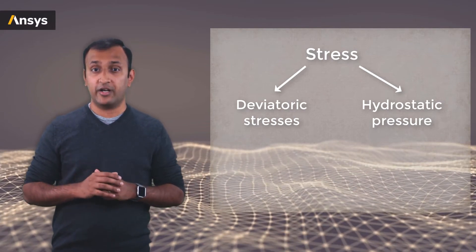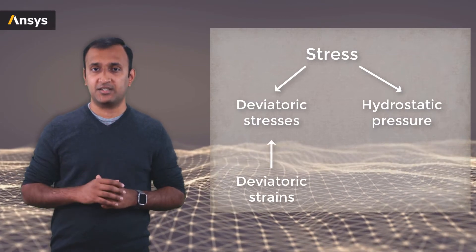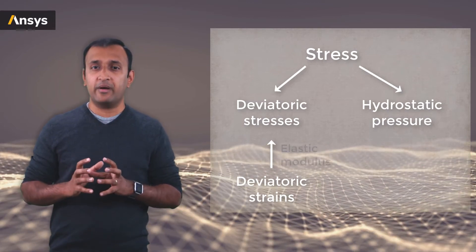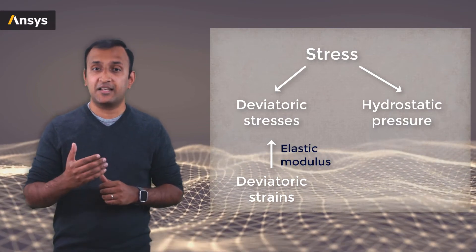The stresses developed in the body due to deviatoric strains are called deviatoric stresses. And the ability of the material to resist deviatoric strain is the elastic modulus.